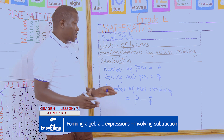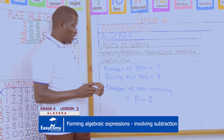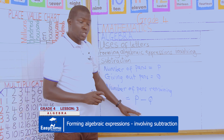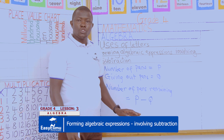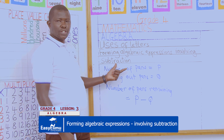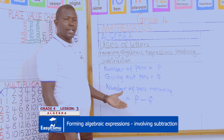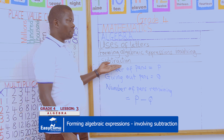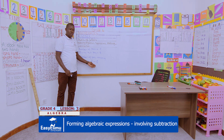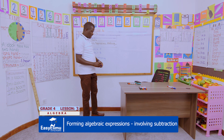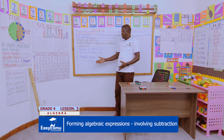What I am remaining with now is my number of pens remaining, and here we have used letters to form an algebraic expression involving subtraction. P pens take away Q pens — that is our first expression formed involving subtraction.